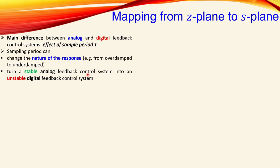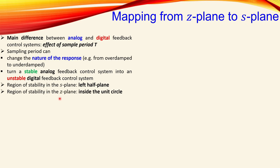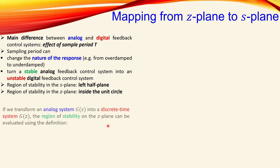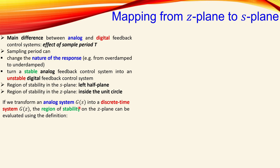The sampling period can turn a stable analog feedback control system into an unstable digital feedback system, which is of course not what we want. The region of stability in the s-plane is given by the left half plane — that is the safe region — and the right half plane is the danger zone where the system will be unstable. The region for stability in the z-plane is inside the unit circle, so a different region. The mathematical expression to go from s to z, or from z to s, is z = e^(Ts).